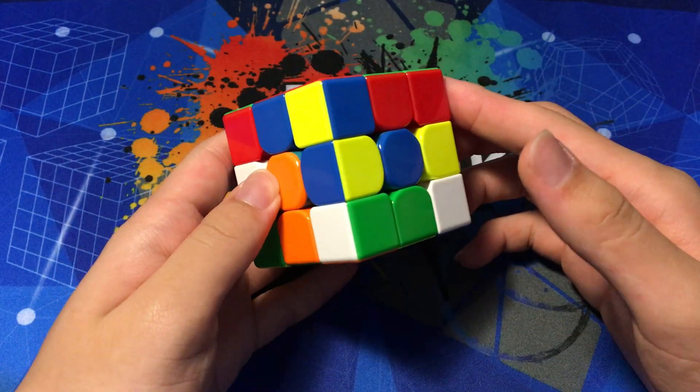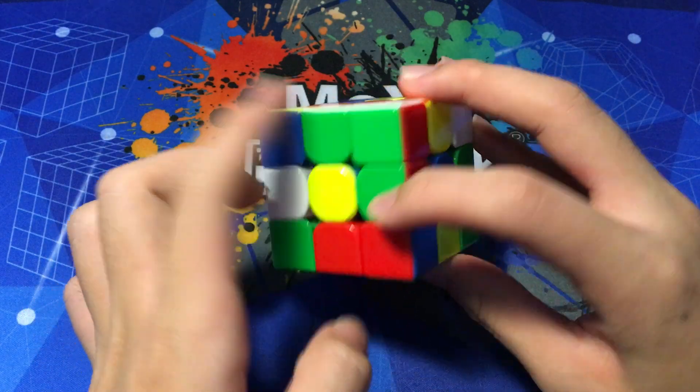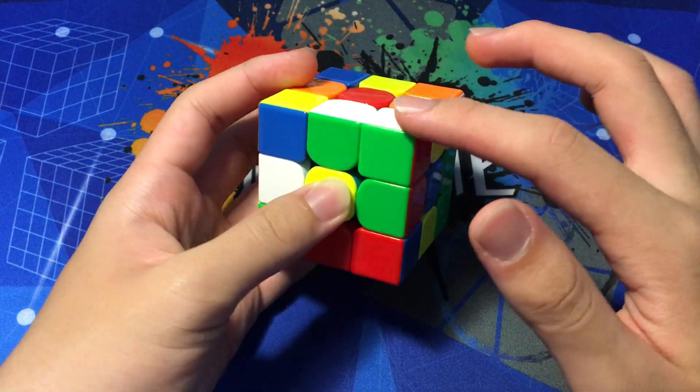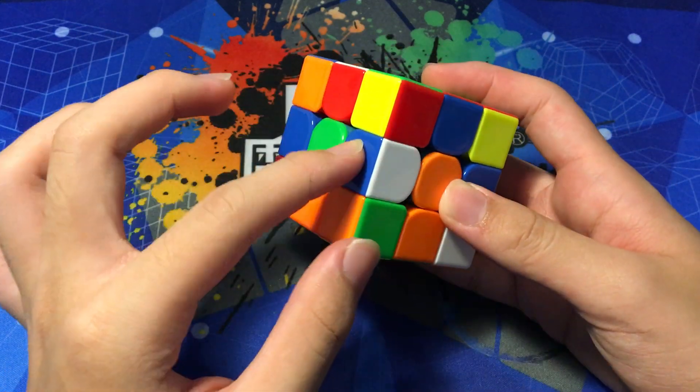Ryan's going to start off with a white X-cross. His cross pieces are here, here, here, and here. We also notice this block which can be attached with this cross edge as well. So a very simple cross here.